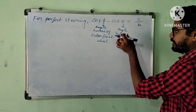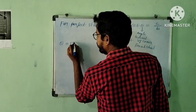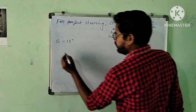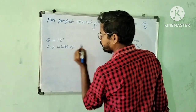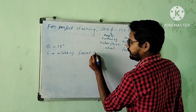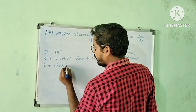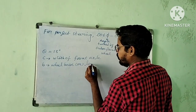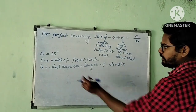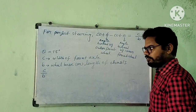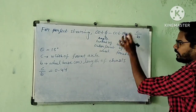In this question, the angle turned by the inner front wheel is given as θ = 18 degrees. Here, C is the width of the front axle and B is the wheelbase, also known as the length of the chassis. The ratio C by B is given as 0.44. Here the only unknown is φ, the angle turned by the outer front wheel.